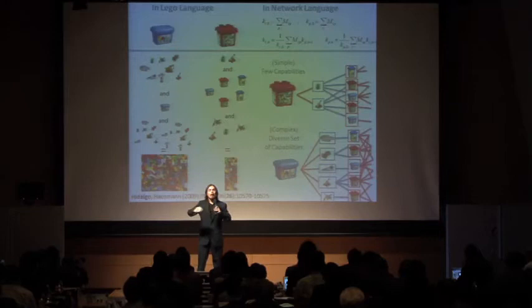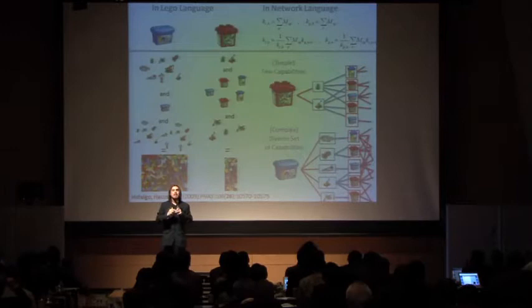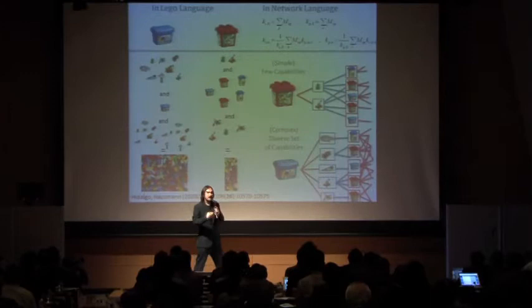If you have a product that only requires a few person bites, that product probably can be made by many countries. But the opposite would also be true. If you have a product that is very complex, that will require lots of person bites, there are very few countries that can make those products.